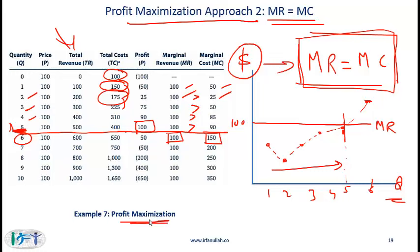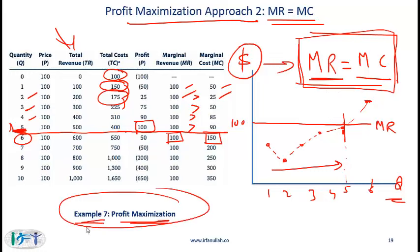Earlier I told you that the quantity produced is where marginal revenue equals marginal cost. Now you know why it is the case. What I want you to do now is example 7 from the curriculum, which deals with profit maximization.